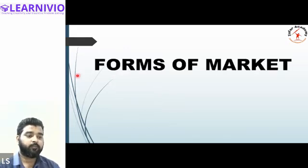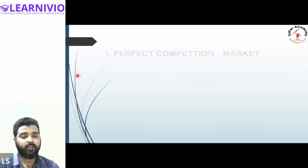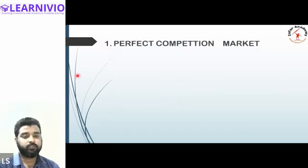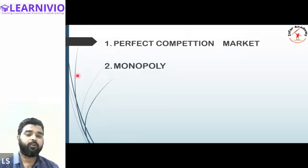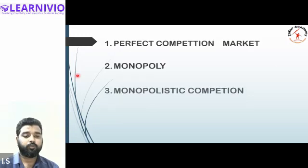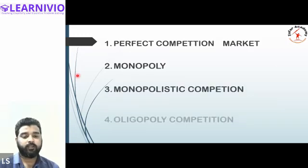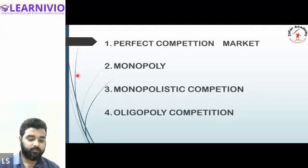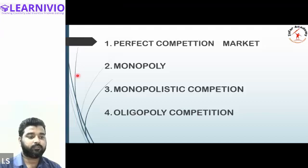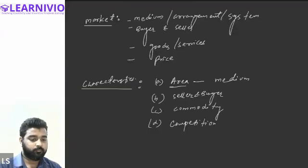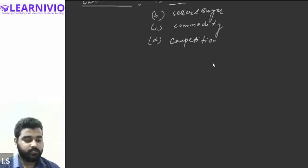On the basis of competition, we can categorize the market as perfect competition and imperfect competition. Imperfect competition is further divided into monopoly, monopolistic competition, and oligopoly. These are the different types of market on the basis of competition, and we will discuss each in detail.